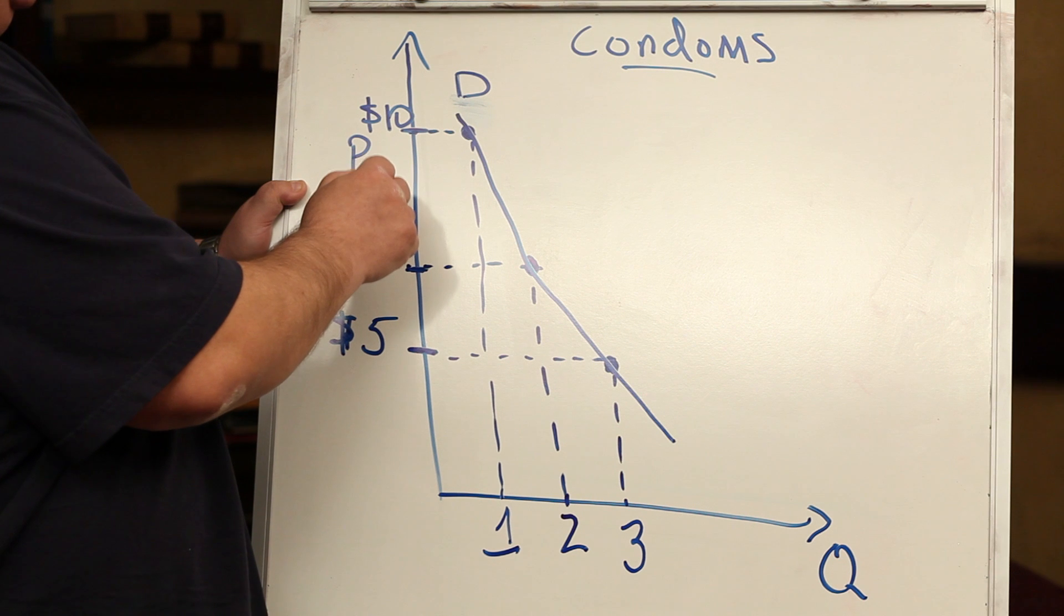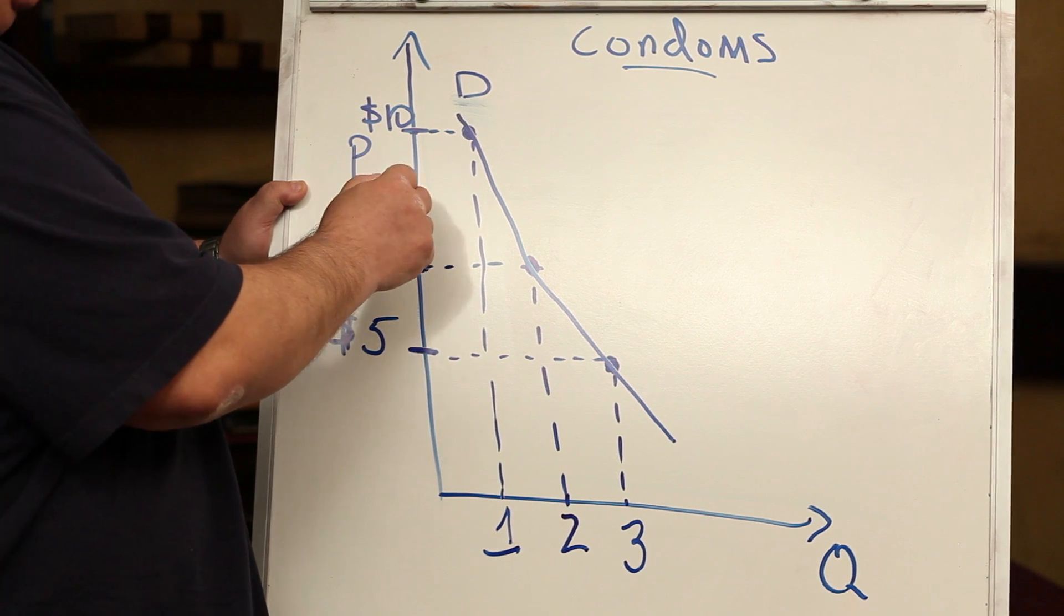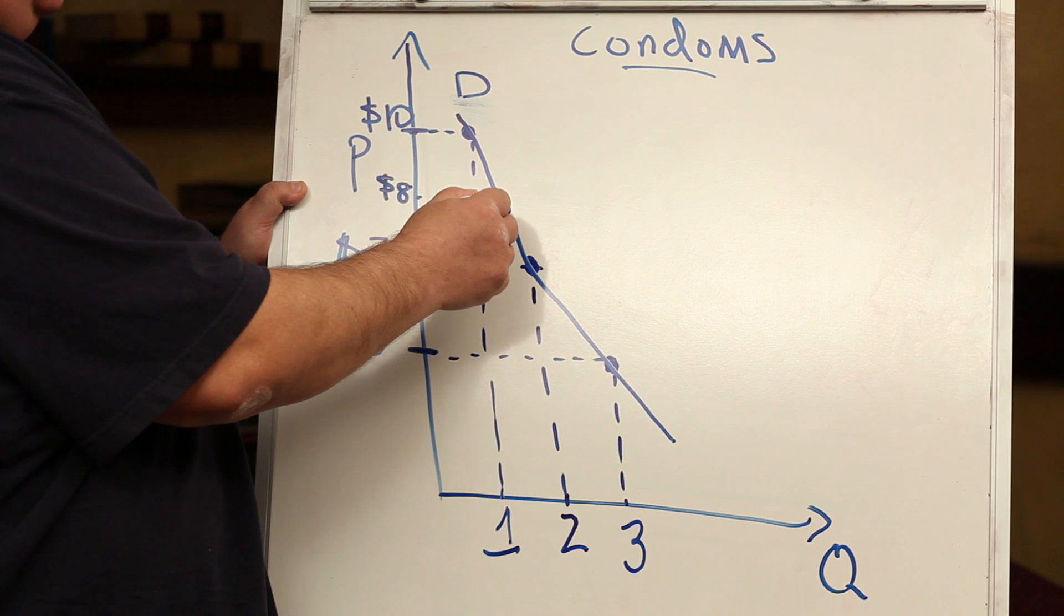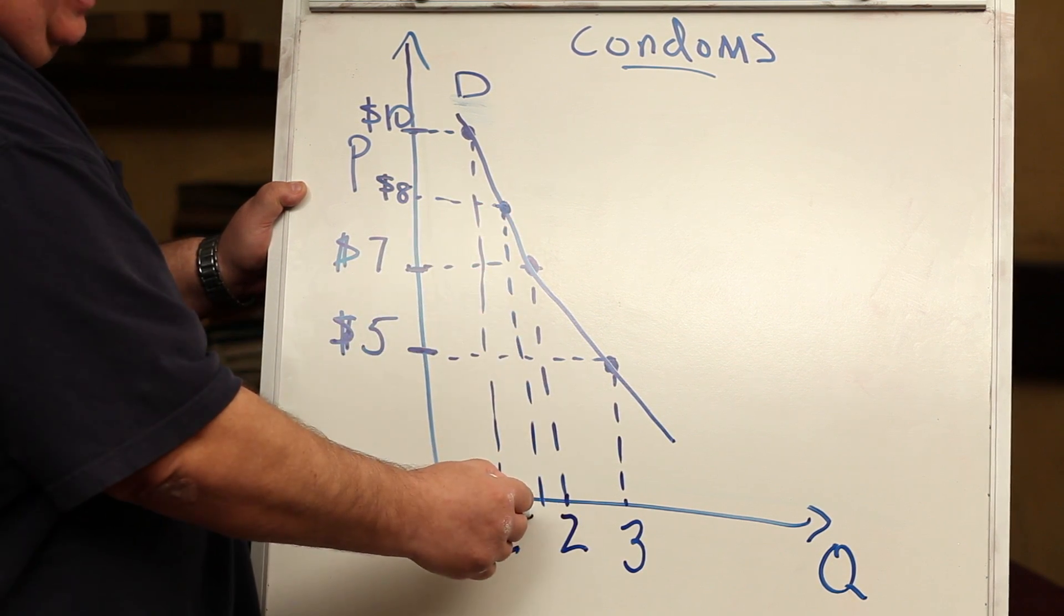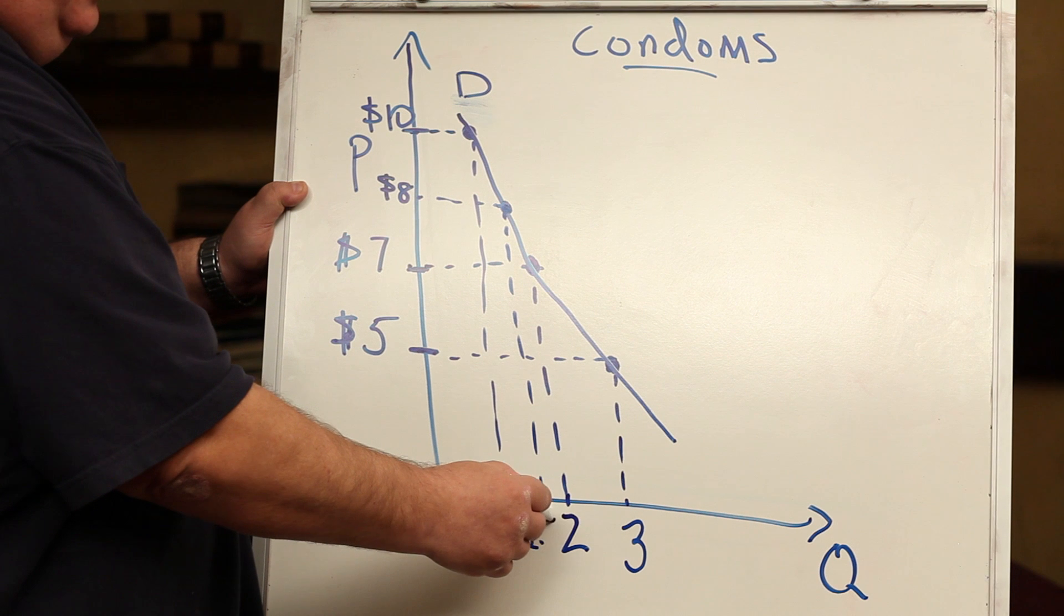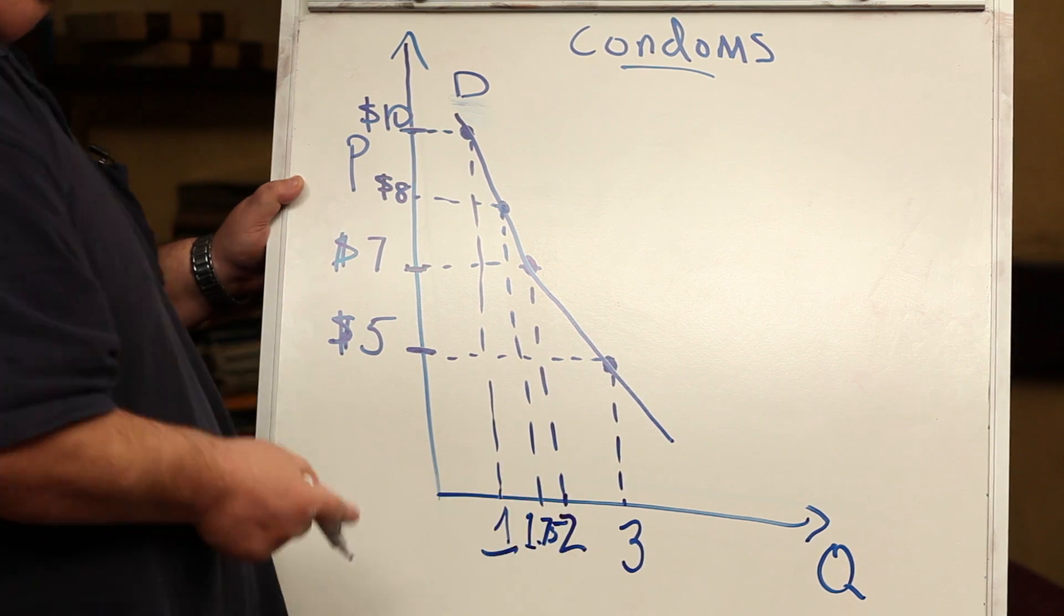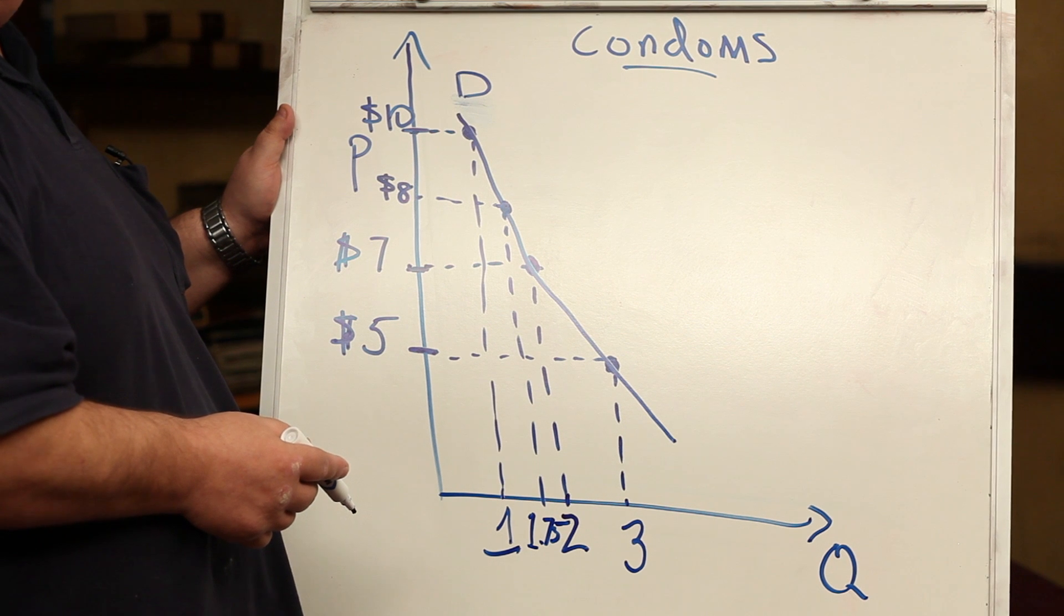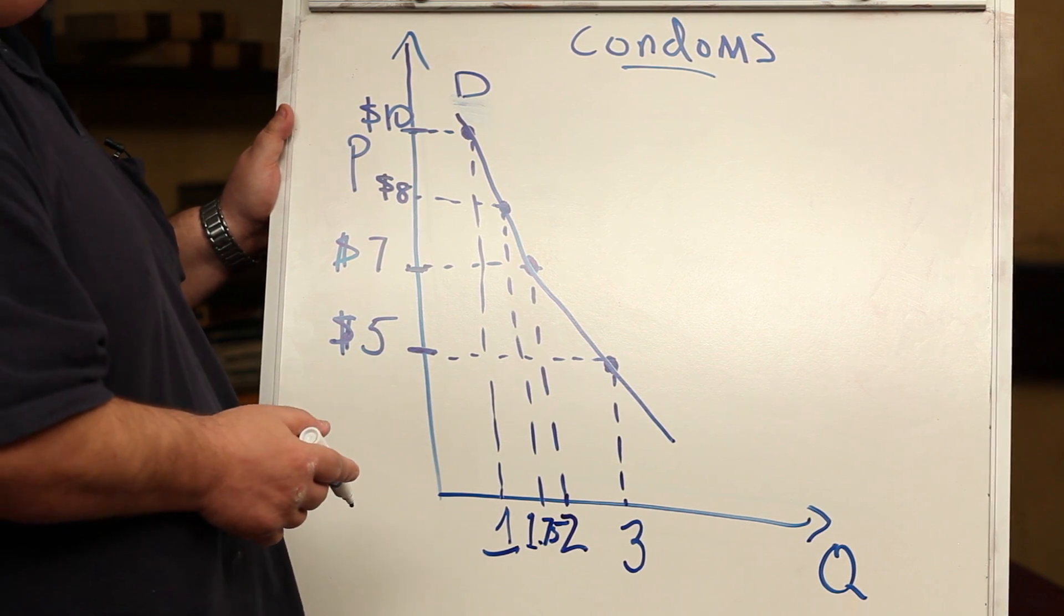I could have put in another price here, $8, followed it out to this point. Here would be the quantity demanded. That looks like about 1.75, which doesn't make sense because we can only buy whole packs of condoms. On the other hand, you understand what we mean.